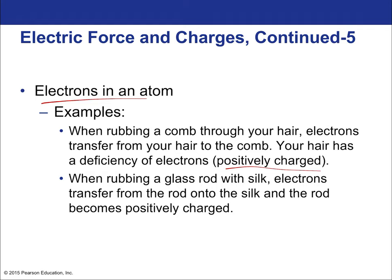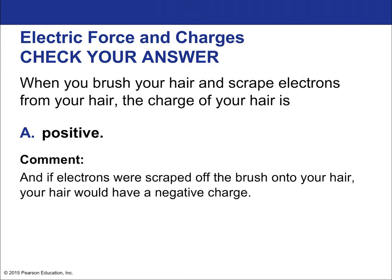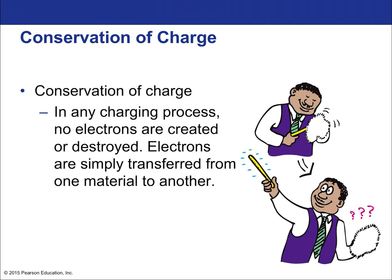When rubbing a glass rod with silk, electrons transfer from the rod onto the silk, and the rod becomes positively charged—just like your hair. When you brush your hair and scrape electrons from it, your hair becomes positive because it has lost electrons.